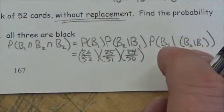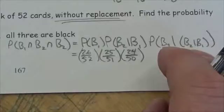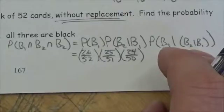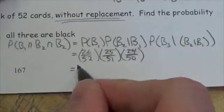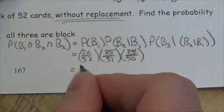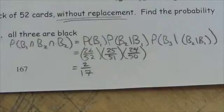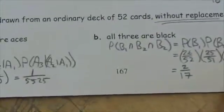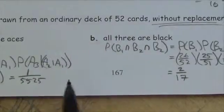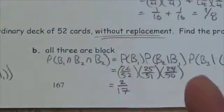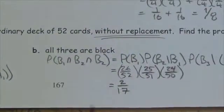So using the calculator, that's 26 × 25 × 24 divided by 52 × 51 × 50. When we multiply through and reduce the fraction, we get 2 out of 17. Comparing that to the previous result, this is far more likely — that's because half the deck is black, whereas only one-thirteenth of the cards are aces.